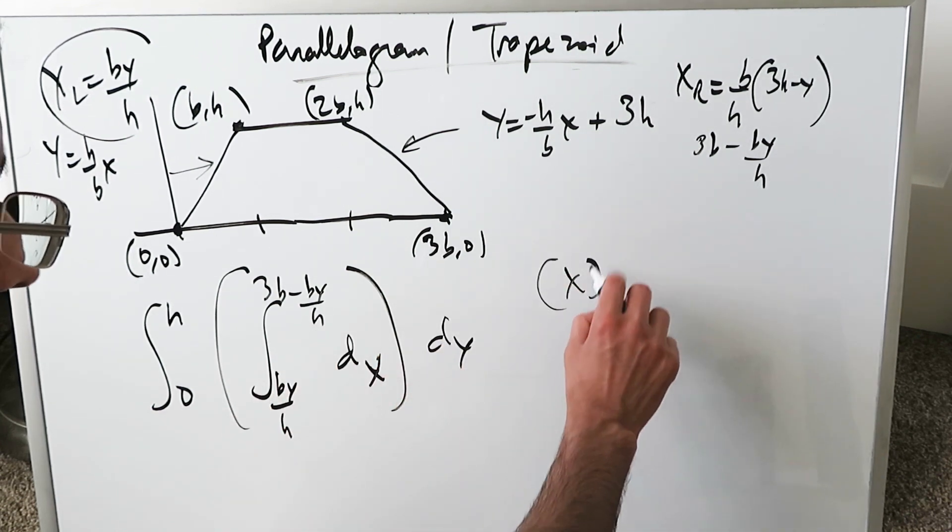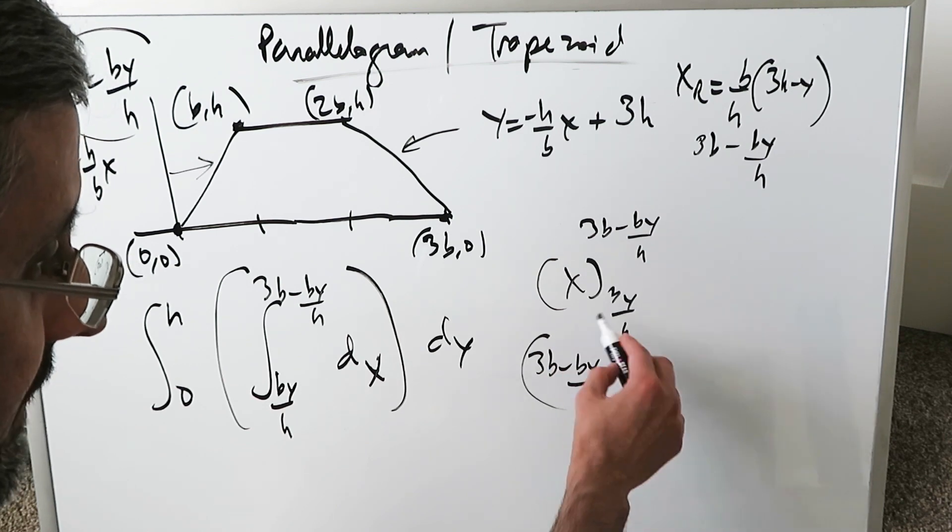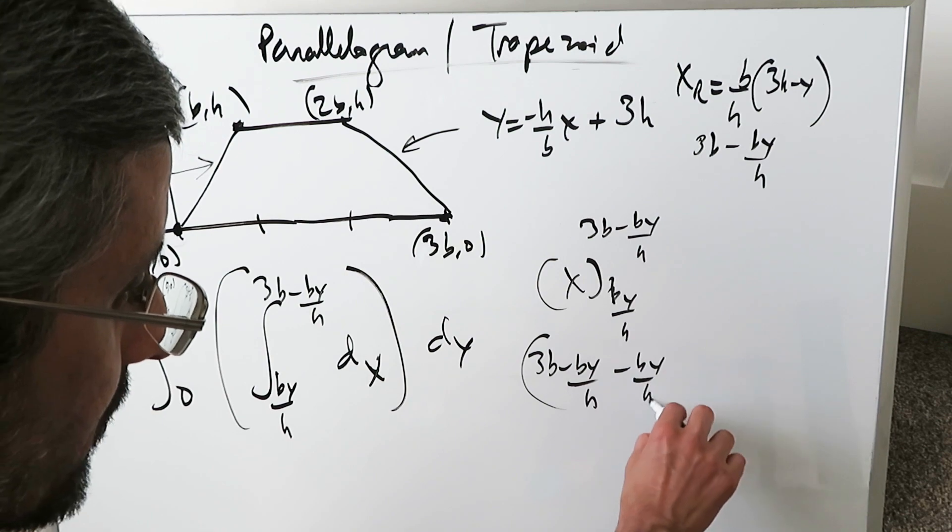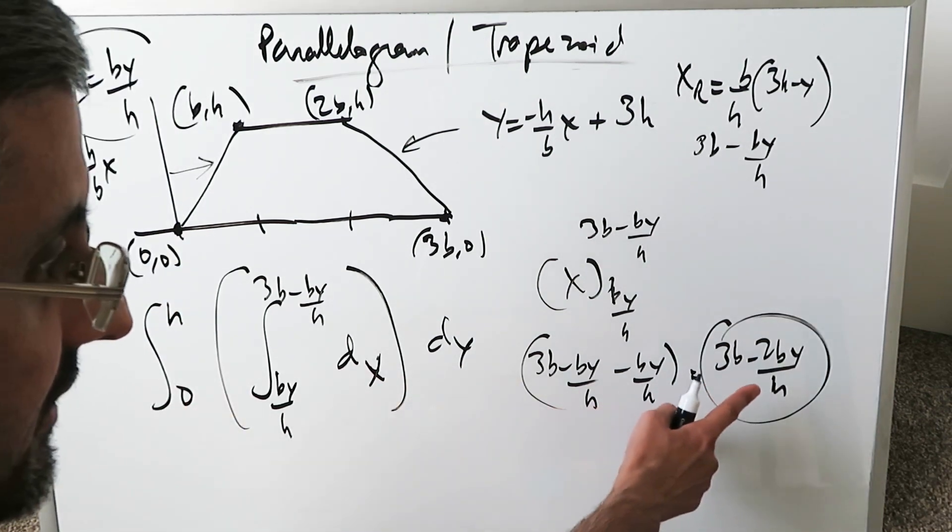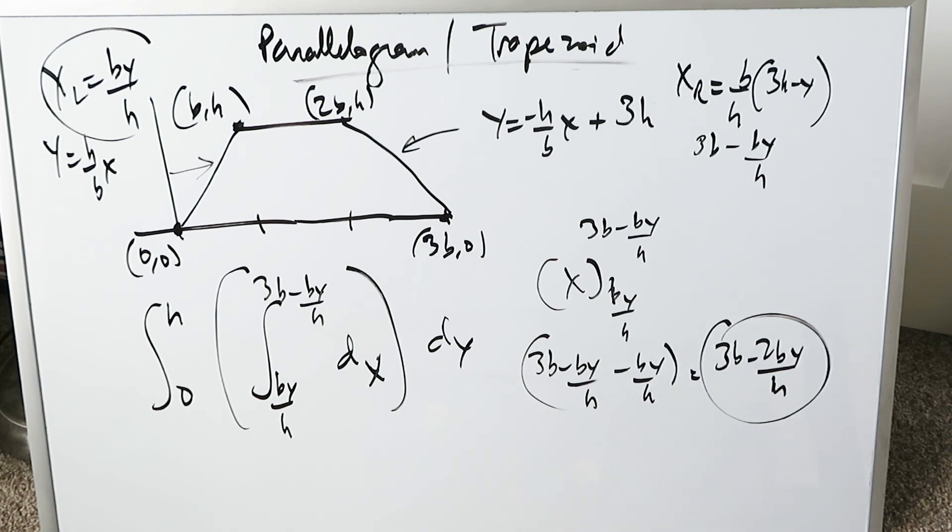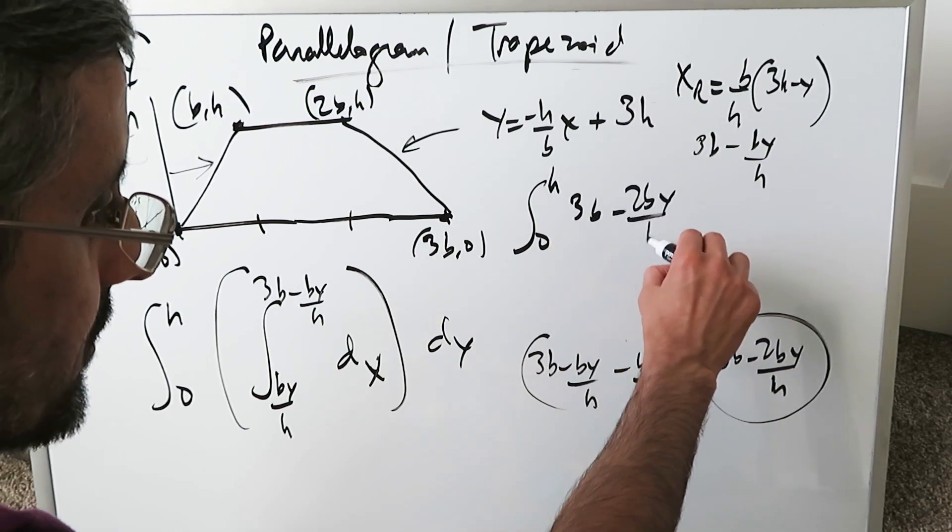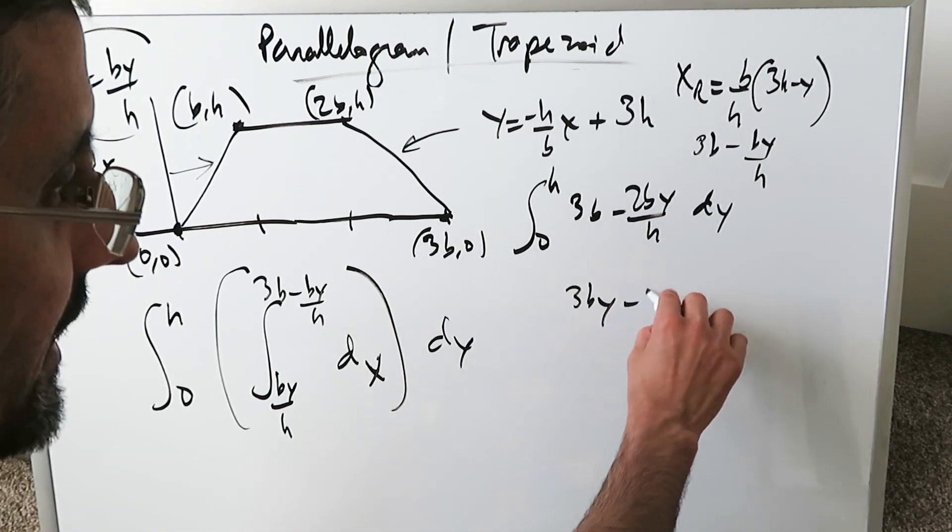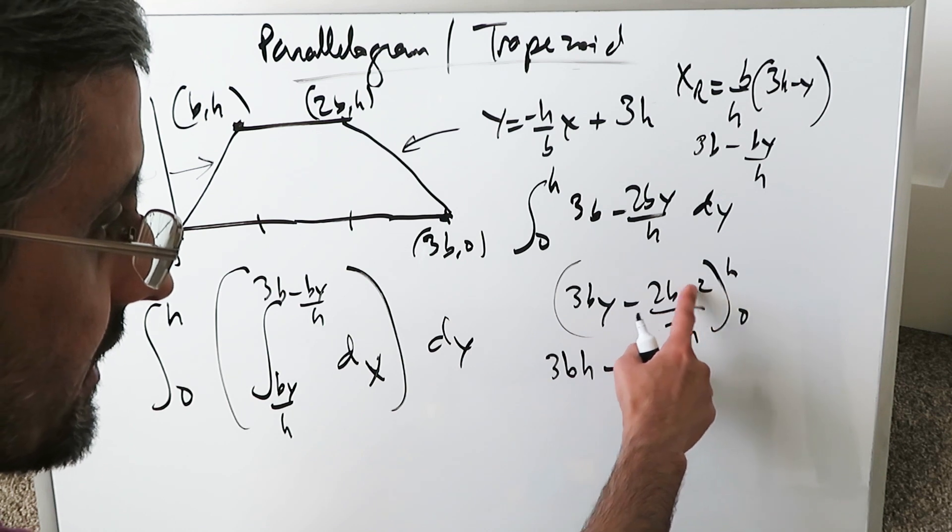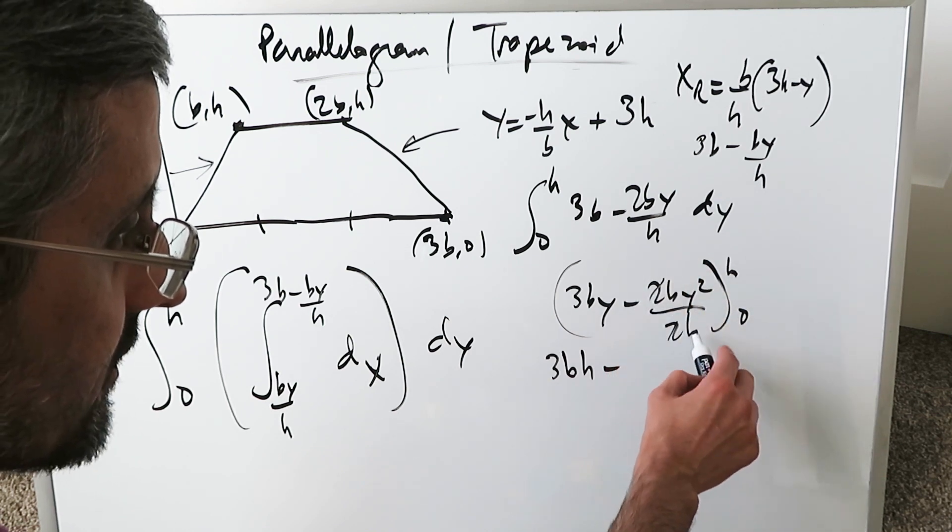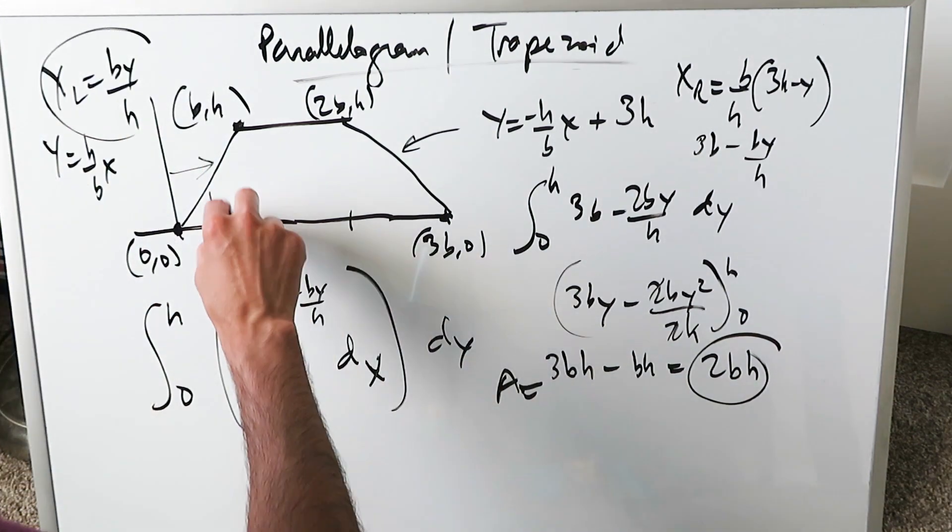The anti-derivative of x: evaluate at 3b - by/h and by/h. The difference is (3b - by/h) - (by/h) = 3b - 2by/h. This integrates with respect to dy because you have a y variable. Rewrite your integral: ∫(3b - 2by/h)dy from 0 to h. Integrating: 3by - 2by²/(2h) evaluated from 0 to h. You'll have 3bh minus 2bh²/(2h). The twos cancel, and one h cancels. You get 3bh - bh = 2bh, which is the area of this trapezoid.